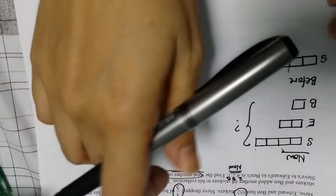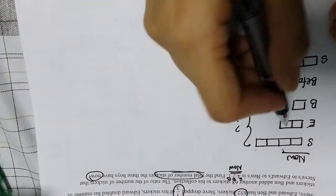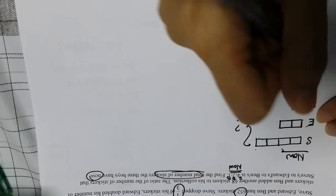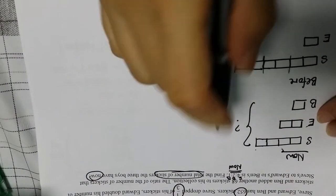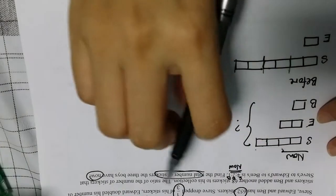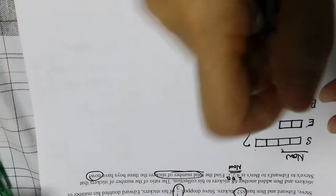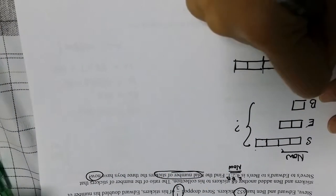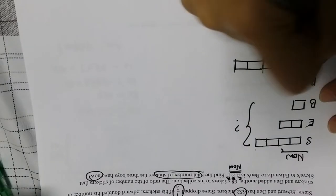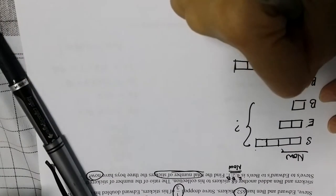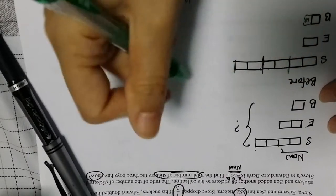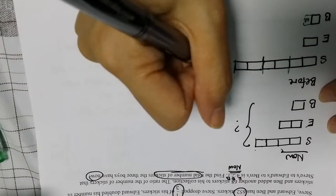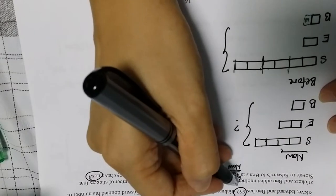Edward double his number of stickers. If Edward double, that means it should be single previously. And Ben add another 68. So because of the fact that Ben add another 68, then it became 1 unit. So therefore this part here is actually 68. Okay, so the total is 652.